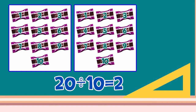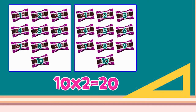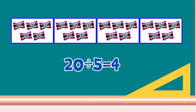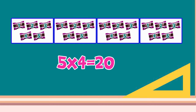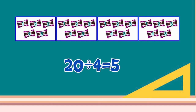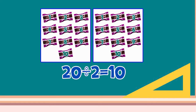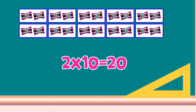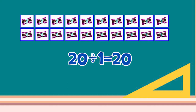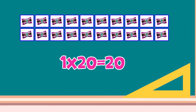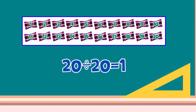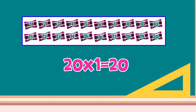20 divided by 10 is 2, so 10 times 2 equals 20. 20 divided by 5 is 4, so 5 times 4 equals 20. 20 divided by 4 is 5, so 4 times 5 equals 20. 20 divided by 2 is 10, so 2 times 10 equals 20. 20 divided by 1 is 20, so 1 times 20 equals 20. 20 divided by 20 is 1, so 20 times 1 equals 20.